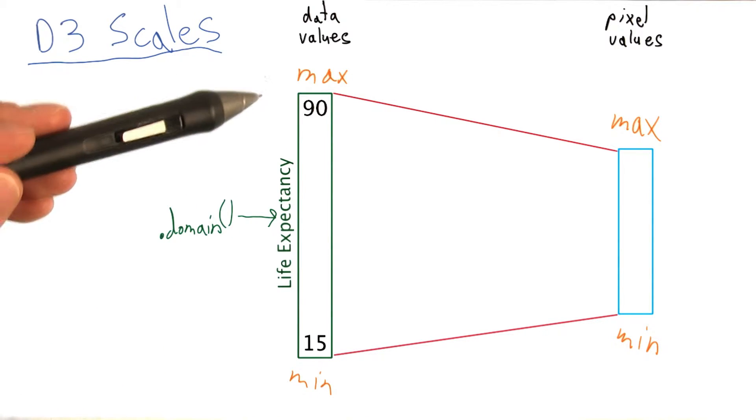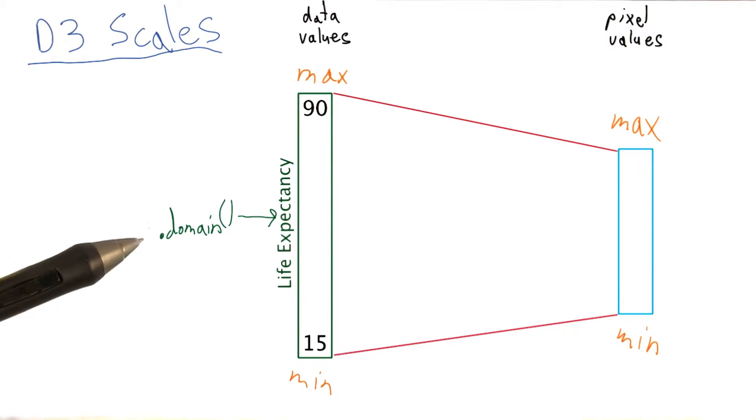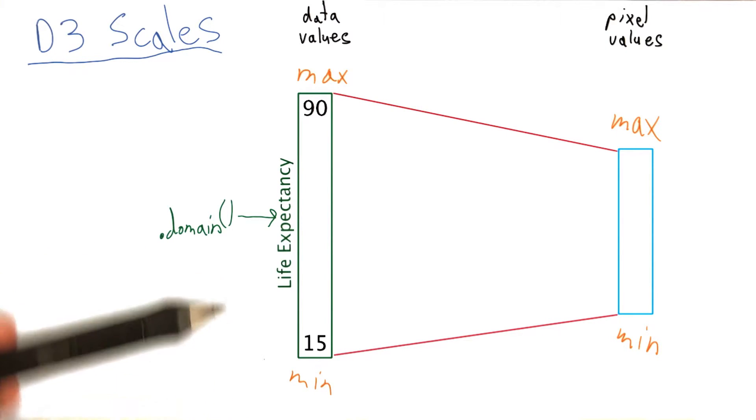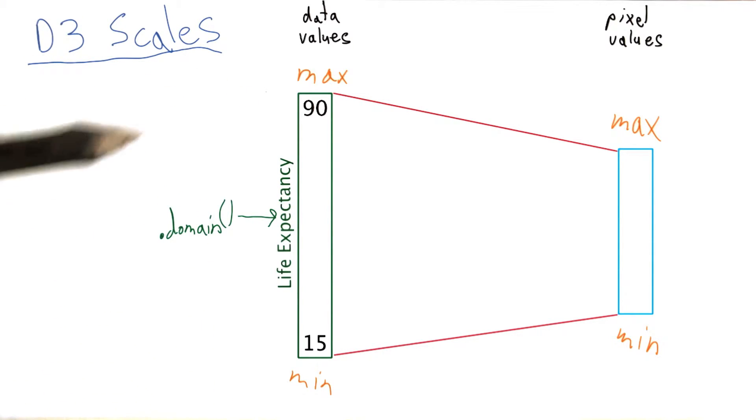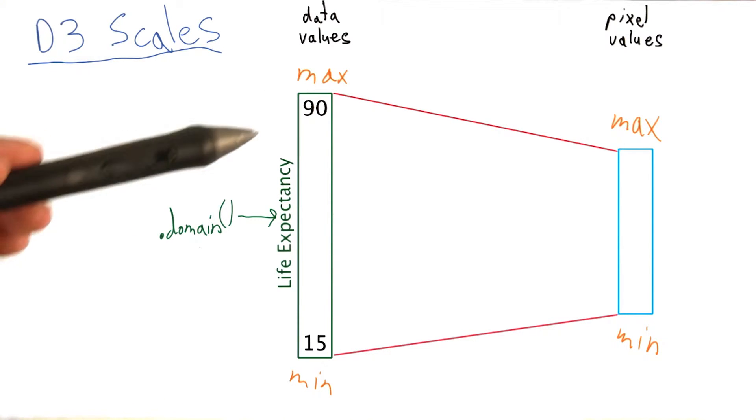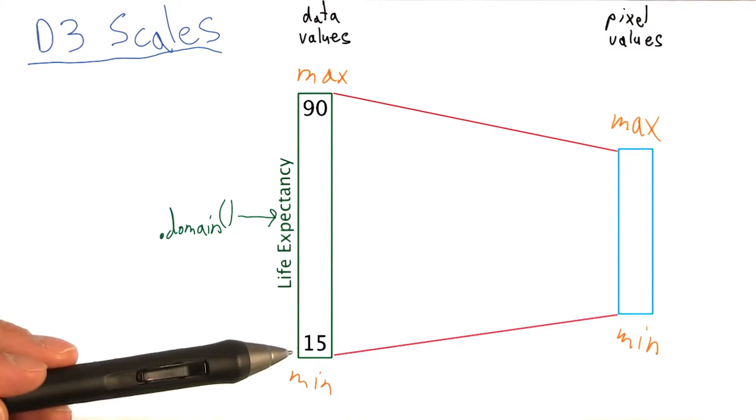D3 refers to the input values as the domain of your data, often represented by the minimum value and the maximum value. But the domain actually refers to the entire extent between the min and the max.